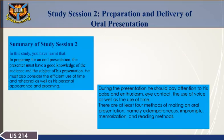Summary of Study Session 2: In this study session you have learnt that in preparing for an oral presentation, the presenter must have a good knowledge of the audience and the subject of his presentation. He must also consider the efficient use of time and rehearsal, as well as his personal appearance and grooming. During the presentation, he should pay attention to his poise and enthusiasm, eye contact, the use of voice, and the use of time. There are at least four methods of making an oral presentation: extemporaneous, impromptu, memorization, and reading methods. This is the end of Study Session 2. Thank you.